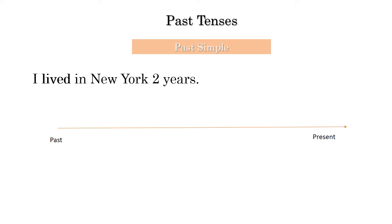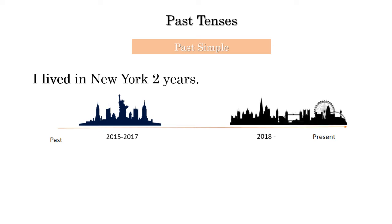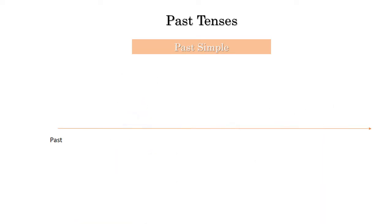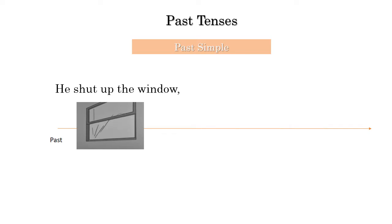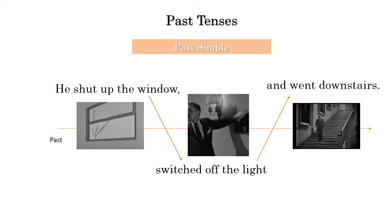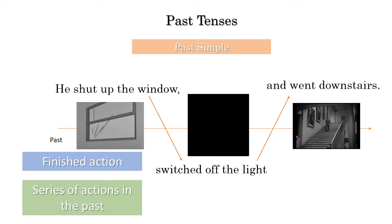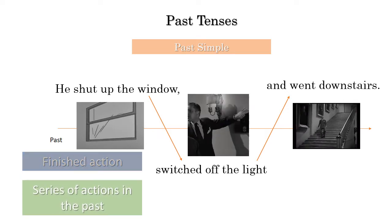For example, 'I lived in New York' means from 2015 to 2017 and I've changed now — it's a past action that finished. Now I live in London, for example. And 'he shut the window, switched off the light, and went downstairs' — these are a series of actions in the past, all finished, so we use the past simple.